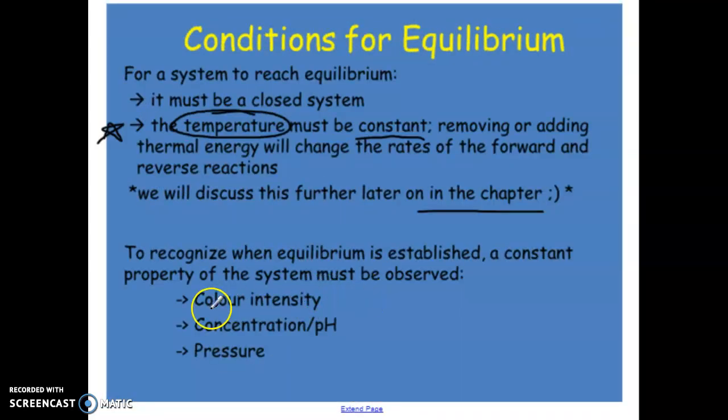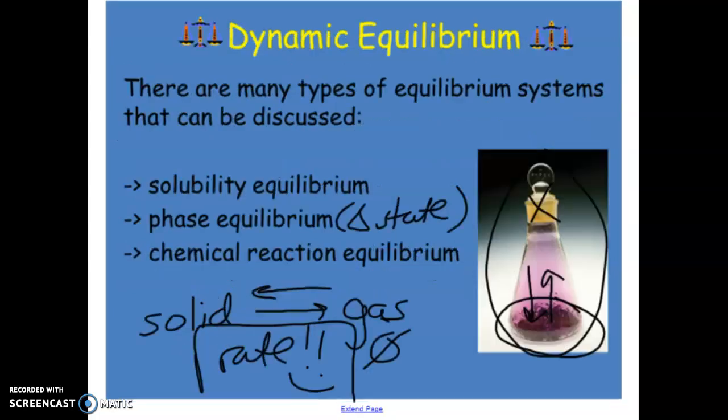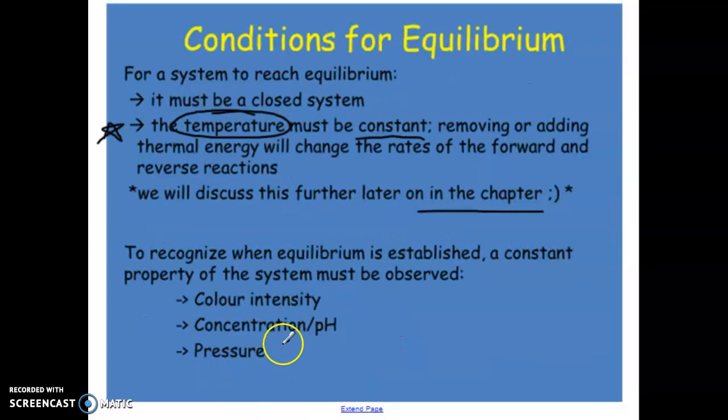It can be something like color intensity. This colored gas can be an example of something that's being observed. Concentration is far more common than anything else that we will discuss here. You may have one or two different examples that you're going to come across, but concentration is typically being used.